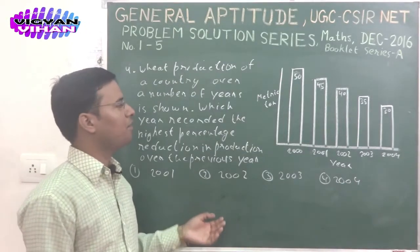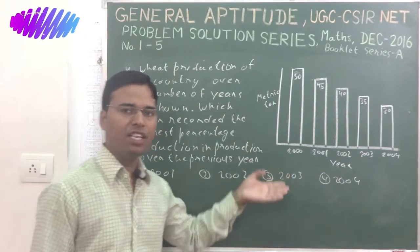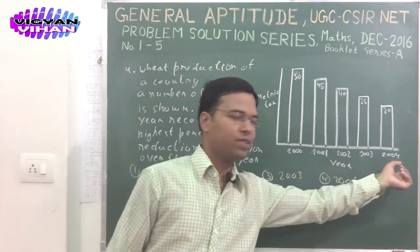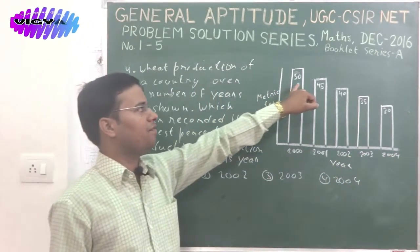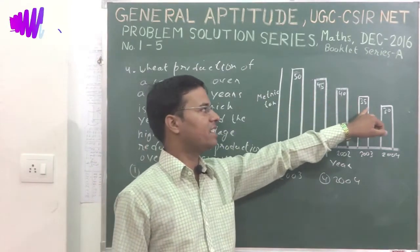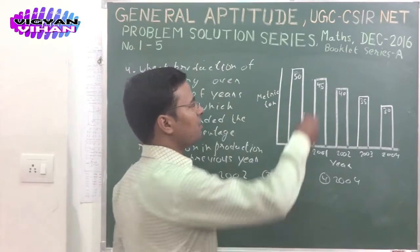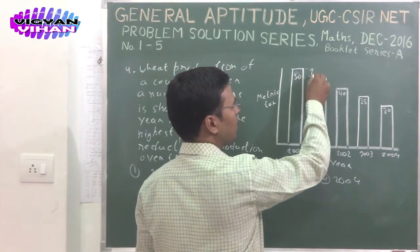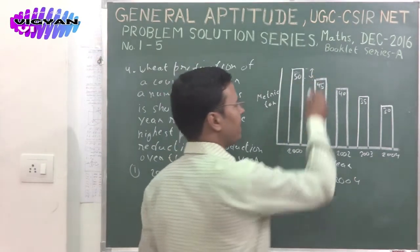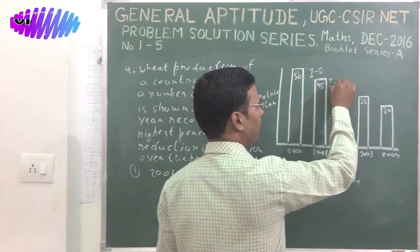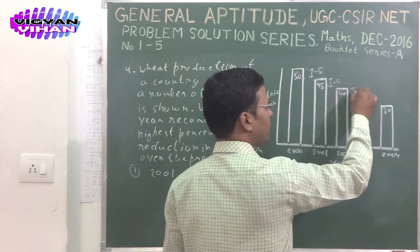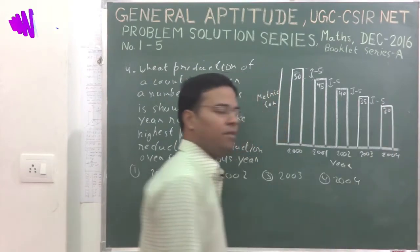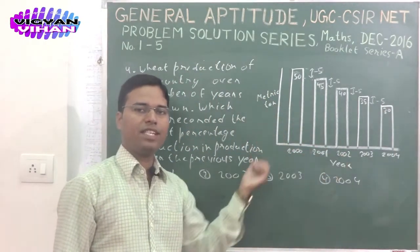Here is problem number 4. A bar chart is given showing the production of a country from 2000 to 2004, in metric tons: 50, 45, 40, 35, 30. There is a reduction in production every year with respect to the previous year; it is minus 5 everywhere — here also minus 5, here also minus 5, here also minus 5. The reduction per year with respect to the previous year is the same.